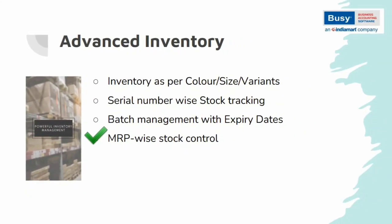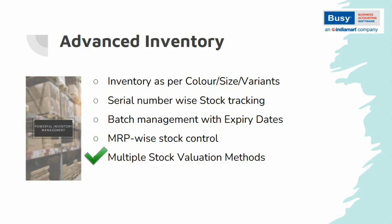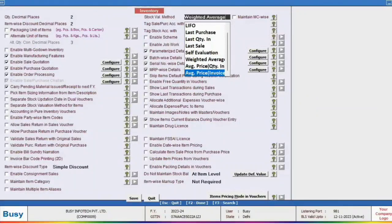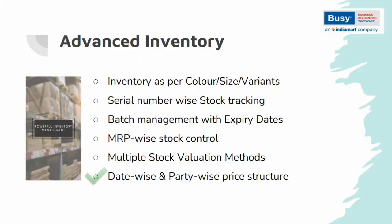MRP-wise Stock Control is another advanced inventory feature in Bizi, highly valuable for the FMCG industry, allowing you to manage multiple MRPs for the same product. Stock Valuation Method offers multiple options including FIFO, LIFO, and Weighted Average to calculate closing stock. Date-wise and party-wise price structure allows you to maintain pricing on a date-wise basis for industries where pricing changes frequently, like Petroleum, Diesel, and Gold, and manage separate price structures for wholesale and retail parties.